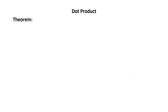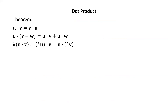Let's look at some properties of the dot product. First, u·v = v·u — the dot product is commutative. Second, u·(v + w) = u·v + u·w — the dot product distributes over addition. Third, k(u·v) = (ku)·v = u·(kv) — we can multiply by a scalar before or after taking the dot product. Also, v·v equals the length of v squared, and the zero vector dotted with any vector v gives the scalar zero.